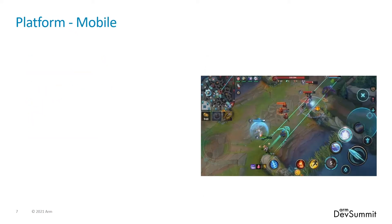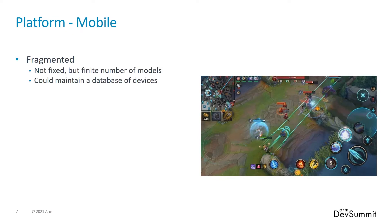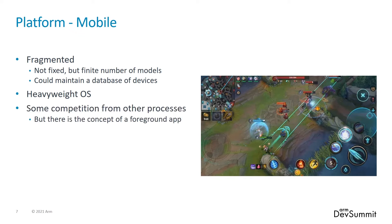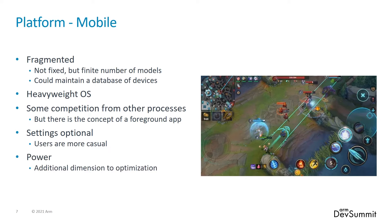Mobile is in many ways similar to PC. People describe the mobile space as fragmented, but arguably it is simpler than PC. There are a finite, but ever increasing, number of devices to target. There is still a pretty heavyweight OS in charge of things, and hardware is accessed through APIs. There is probably less competition from other processes — generally the foreground app will get the majority of resources. Although many games have performance settings, users expect the game to handle these automatically.